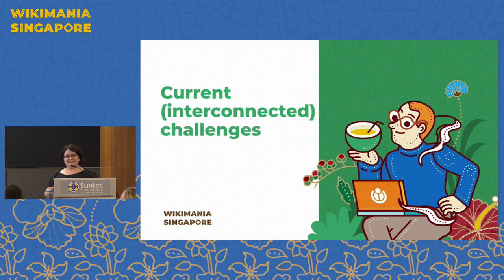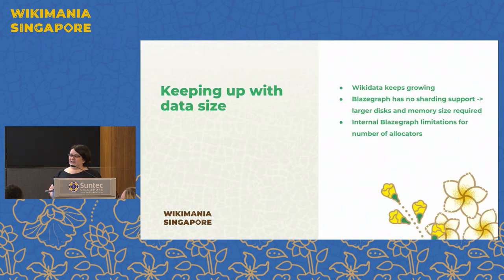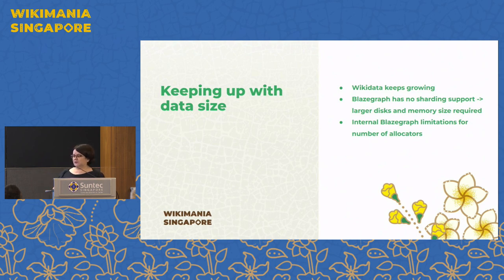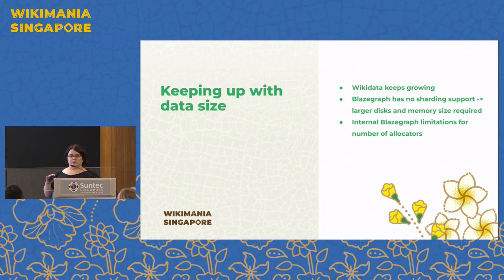There are a bunch of challenges, and they're all interconnected. One of the issues is keeping up with the data size — Wikidata is very successful, which means more and more data gets into Wikidata and BlazeGraph needs to deal with that. The problem is BlazeGraph does not have what we call sharding support, so you cannot easily distribute it across different servers, which means we need larger and larger disks and more memory. On top of that, there are internal limitations in BlazeGraph that mean it will at some point reach a limit even if we keep adding memory and disk space.